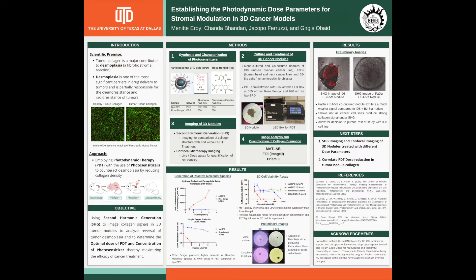Preliminary imaging of 3D nodules has also provided us some very interesting results. First, co-cultured 3D nodules with both cancer cells and fibroblasts have shown that the addition of fibroblasts can aid in the production of ECM, or extracellular matrix, allowing for cell-to-cell adhesion. This helps us mimic the desmoplastic environment in an in vitro model. Preliminary SHG imaging has also shown that not all combinations of cancer cells and fibroblasts produce strong collagen signals. Using this information, we were able to elect the use of ID8 cells of the mouse ovarian cancer cell line for the rest of our studies.